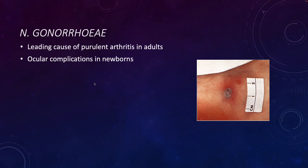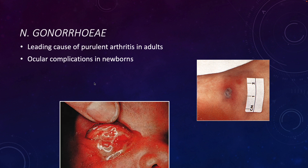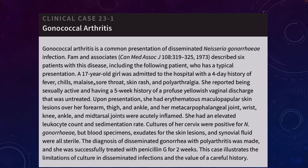Newborns can have ocular complications if they encounter the bacterium while passing through the vaginal canal. The bacterium can also cause anorectal infections and pharyngitis — wherever the bacterium gets is probably where it will cause infection.